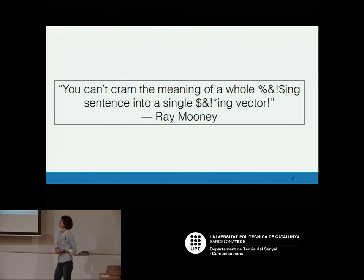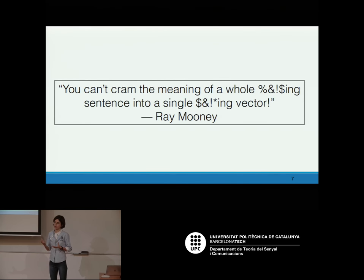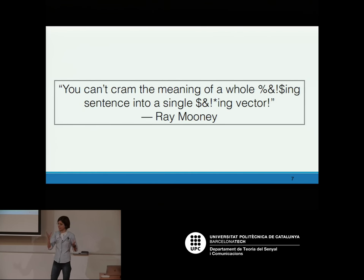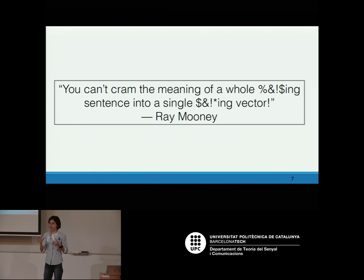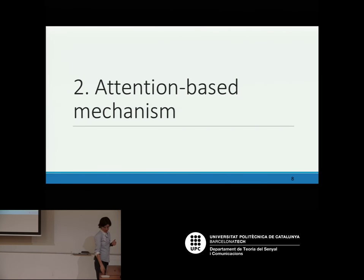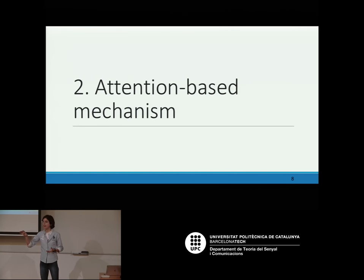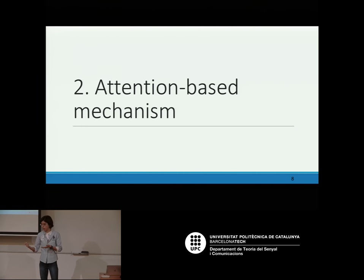Here is another quote saying you cannot do that. We as humans do not do that when we translate. When analyzing a picture, we are not summarizing — we go through the picture. The same applies for sentences. This is the motivation for attention-based mechanisms: we have to put different attention to different parts of the sentence, to different parts of the picture when describing it or translating. This is the main motivation.